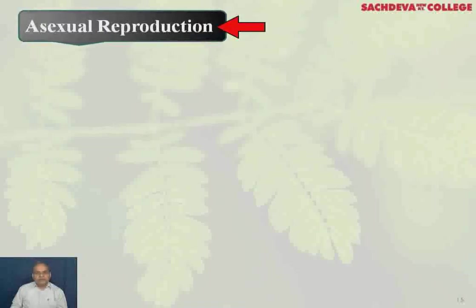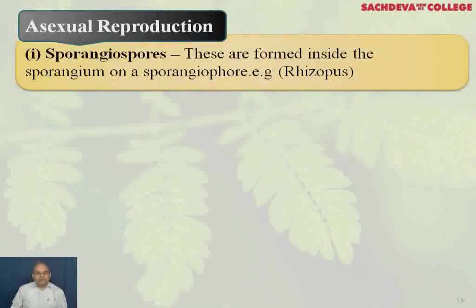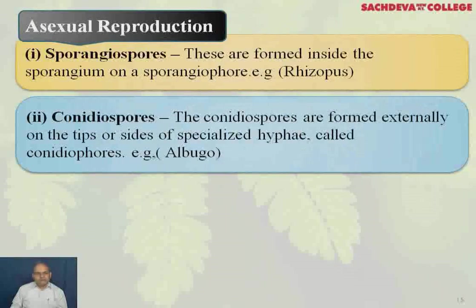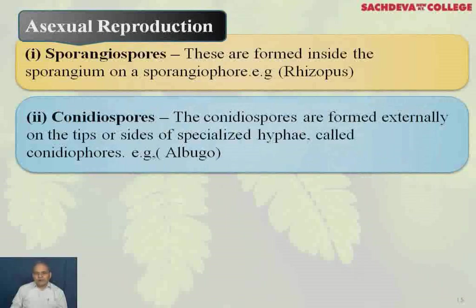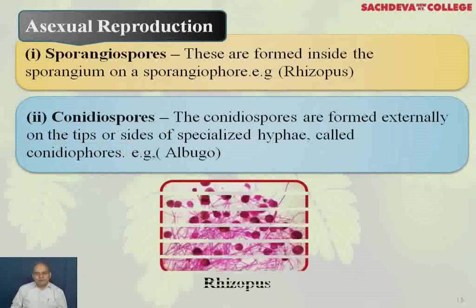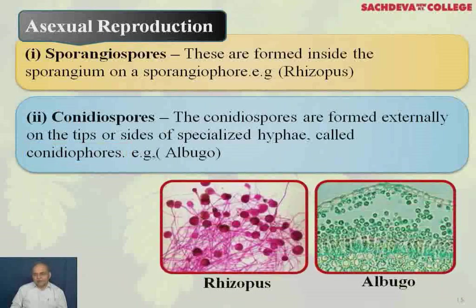Asexual reproduction occurs through sporangiospores, which are formed inside the sporangium on a sporangiophore (example: Rhizopus). Conidiospores are formed externally on the tips or sides of specialized hyphae called conidiophores (example: Albugo). This is Rhizopus and this is Albugo reproducing asexually through conidia.